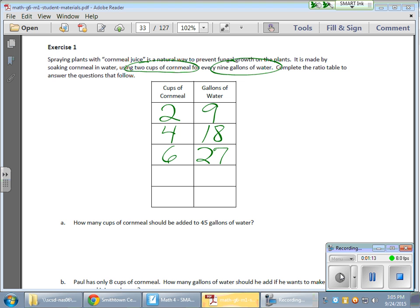Okay, so that brings me to 27. Another two cups of cornmeal brings me to eight, to 36, because another nine gallons of water, that's the ratio for every two. I go to 10, I need nine gallons of water, which brings me to 45.